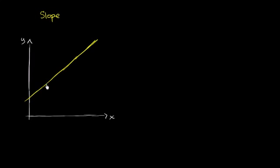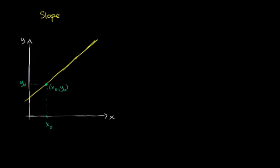So let's put two points on here. Let's say that this point right over here — this x value is x sub 0, pronounced 'x naught.' And when x is x naught for this line, y is y naught.